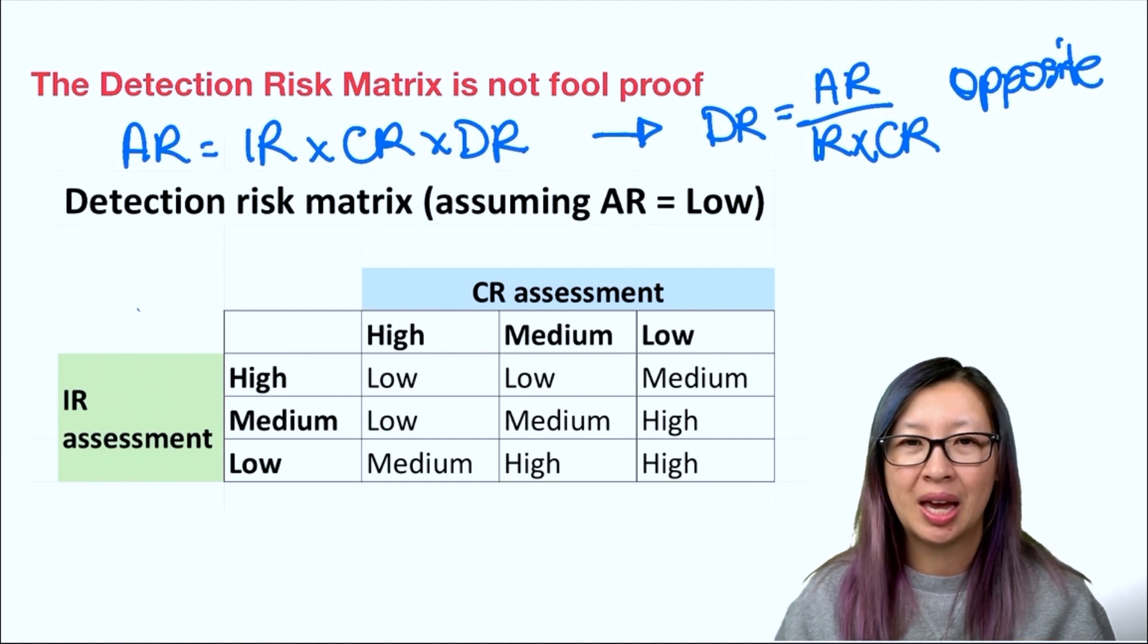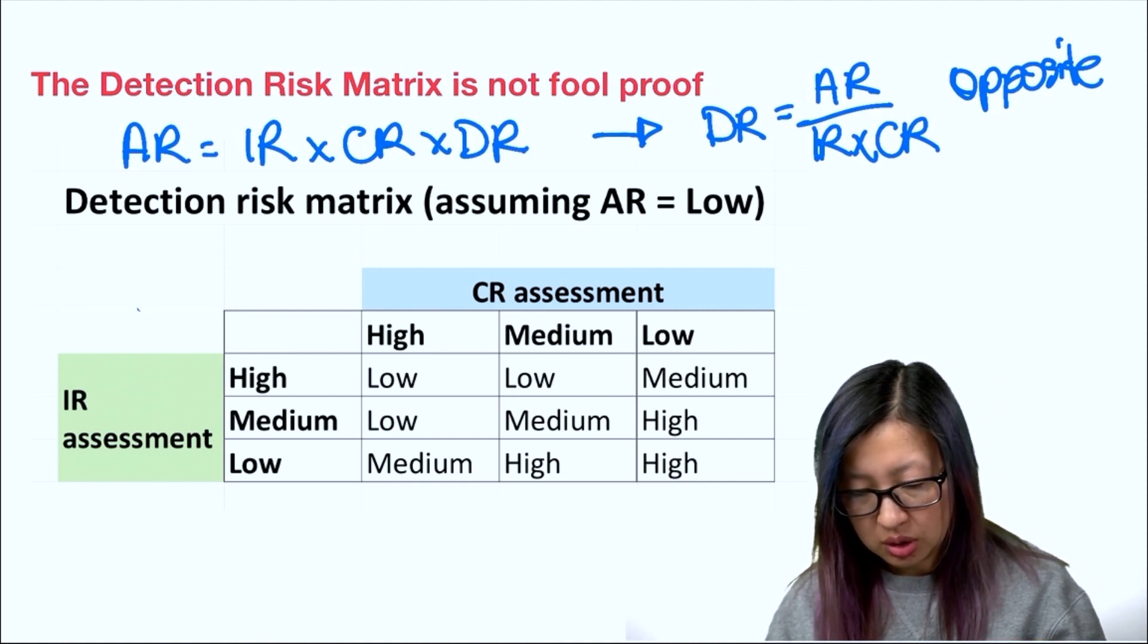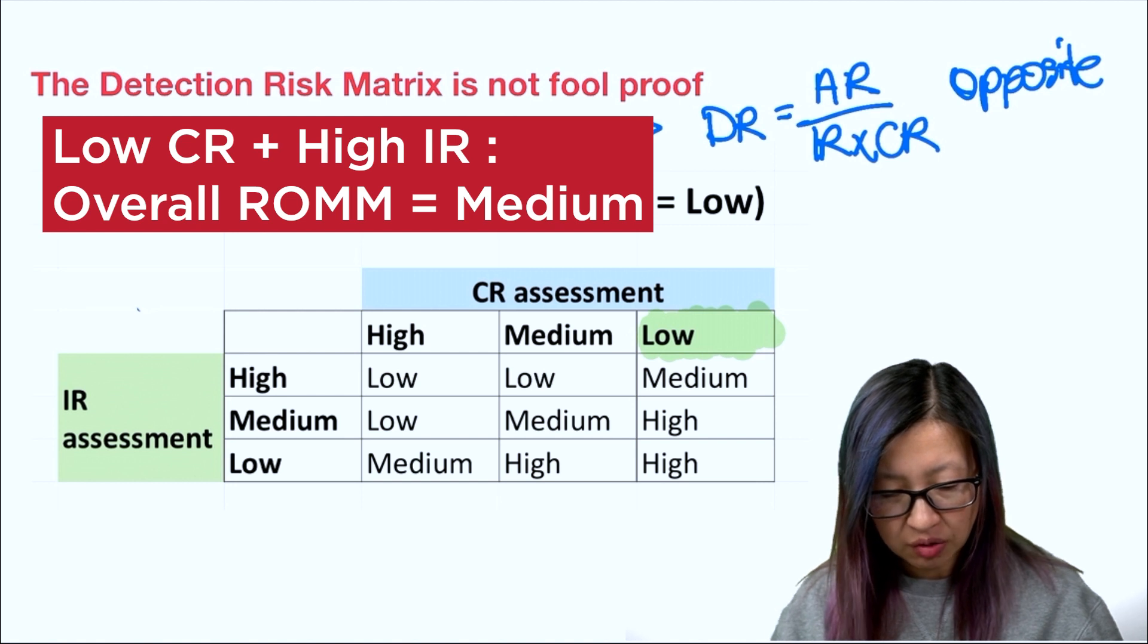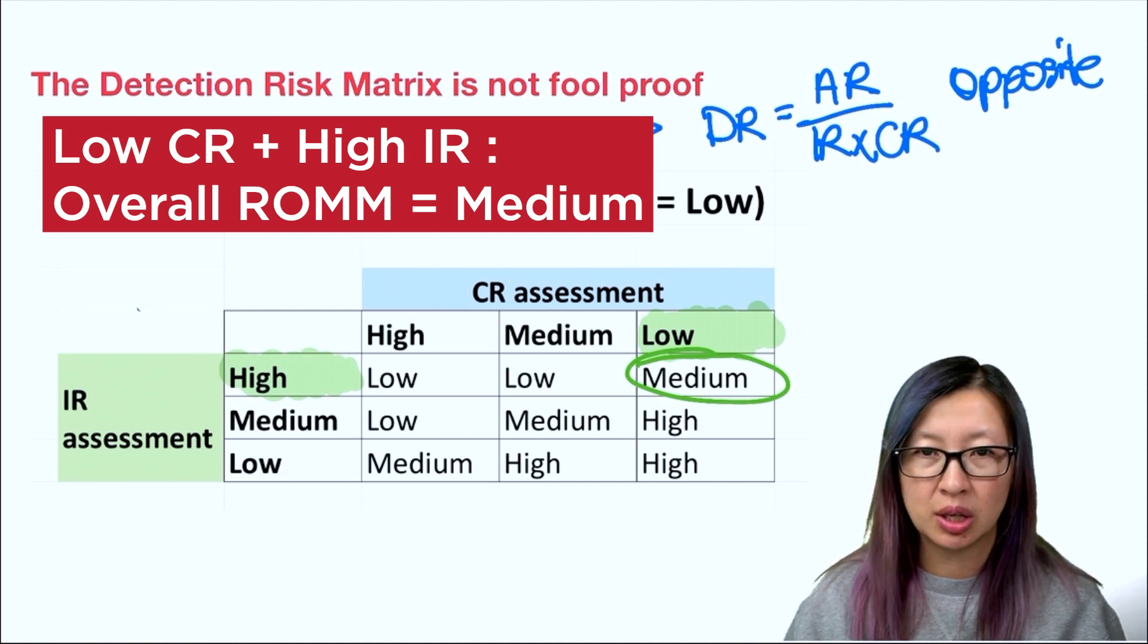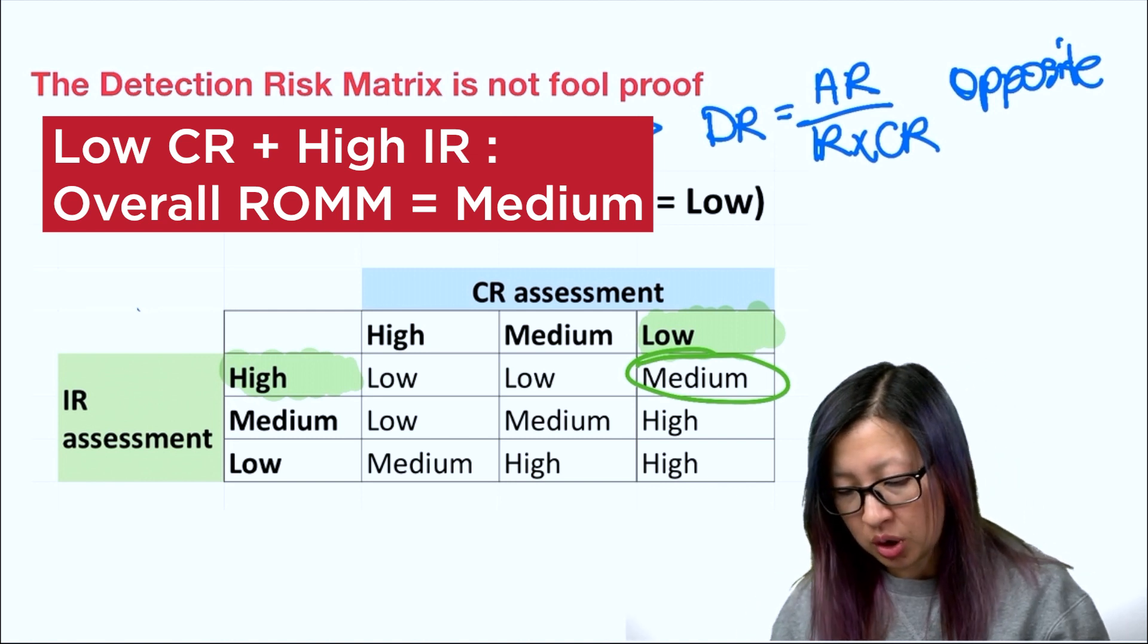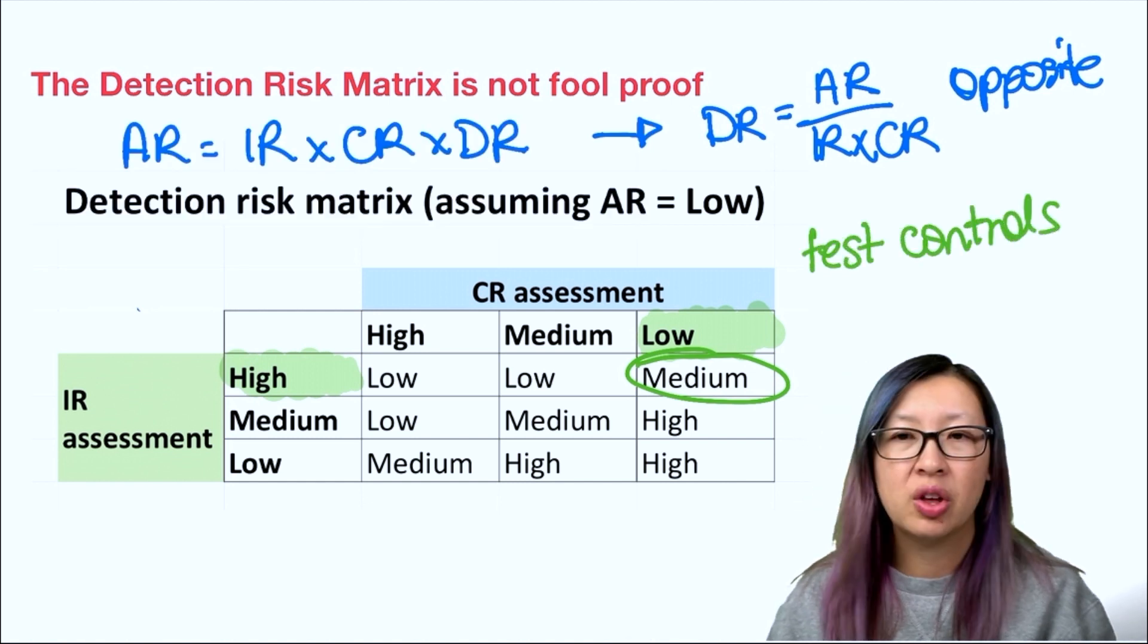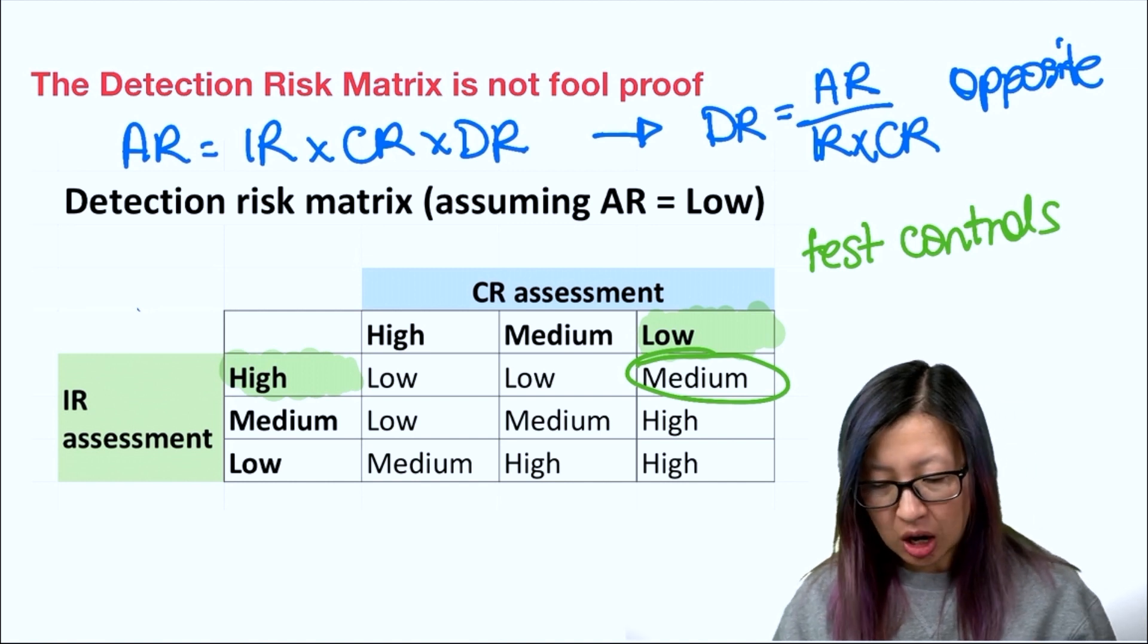So let's start with a situation where we have low control risk—good internal controls—and we have high inherent risk. So we have a situation where we have medium risk. Good internal controls means I'm going to test controls so that I can rely on them. I want to test to make sure that they're working.